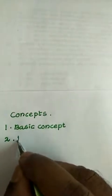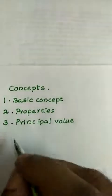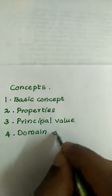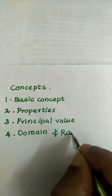Concepts. There are four concepts. First is basic concepts. Number two, properties. Three, principal value. Four, domain and range.